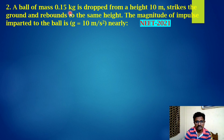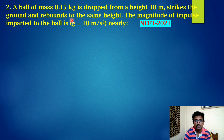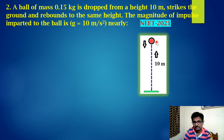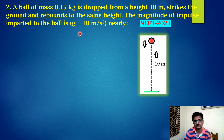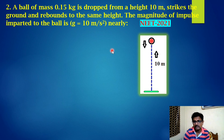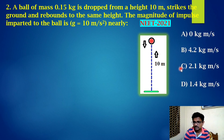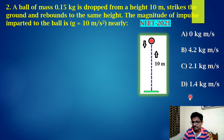Second question: a ball of mass 0.15 kg is dropped from a height of 10 meters, strikes the ground, and rebounds to the same height. The magnitude of impulse imparted to the ball is to be found, given g = 10 m/s². This was given in NEET 2021. From the options, we have to identify the correct answer.